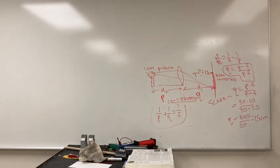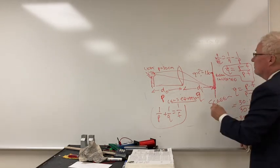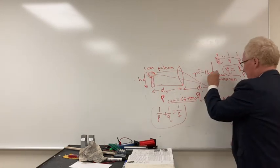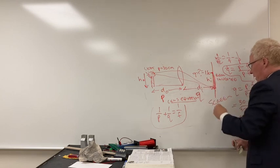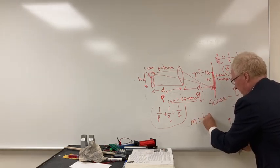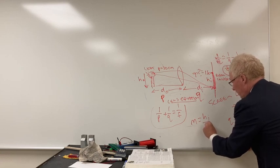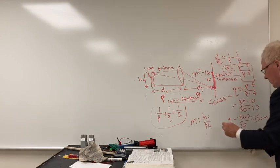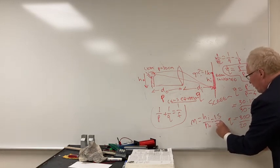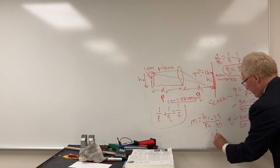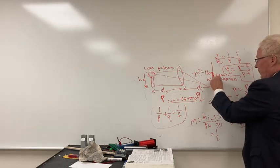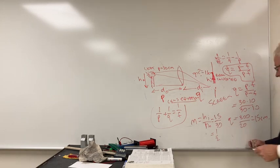The magnification is defined as hi over ho, the image height over the object height. It's also equal to q over p. So that would be 15 over 30, which is one-half. In this case, the image would be half the original size.